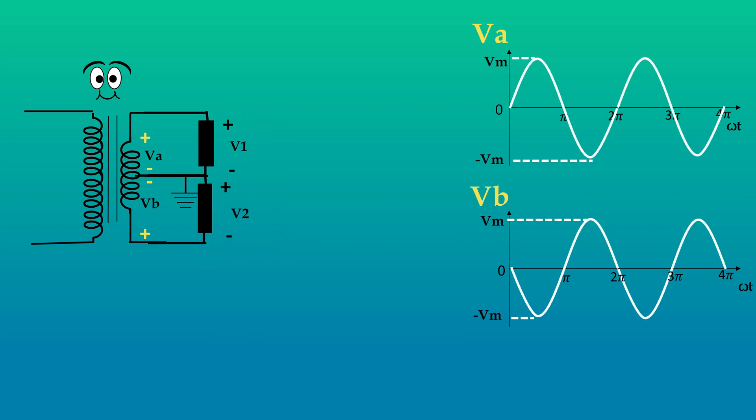That means VA and VB have a 180 degree phase shift. To learn how this center tap transformer is used in full wave rectifier, continue watching.